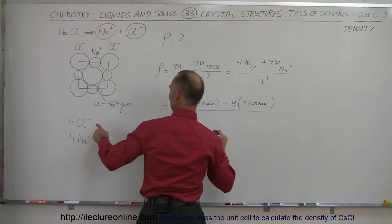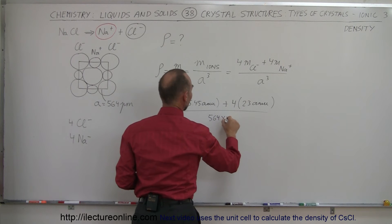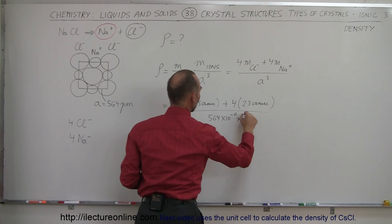Divided by, and of course that would then be 564 times 10 to the minus 12 meters, you have to cube that.